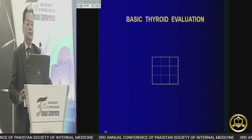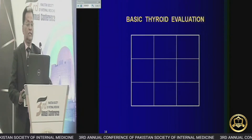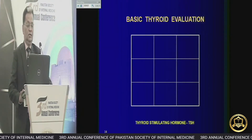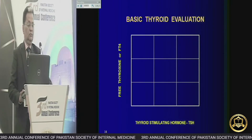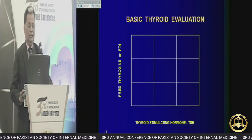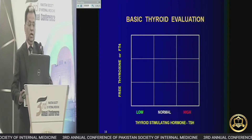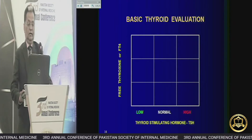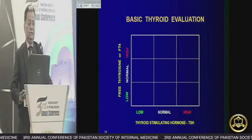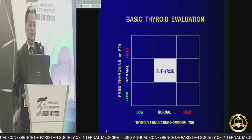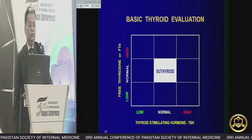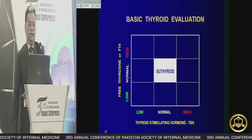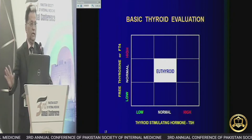What is the nine-square approach? On one side, the TSH; on the other side, free T4. If the TSH and free T4 are normal, then the patient is euthyroid — forget that.